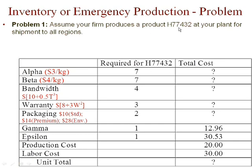Since the product configuration is 77432, it tells us that we are using 7 kilograms of alpha, 7 kilograms of beta. The bandwidth is 4 terahertz, warranty is at level 3, packaging is at level 2. The gamma and epsilon that is needed is 1 and 1. This information can be used to calculate total cost, because what you see in red is what is available in the manual.